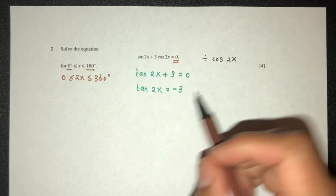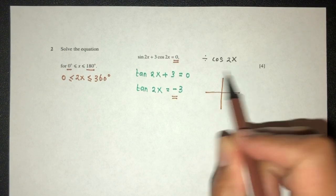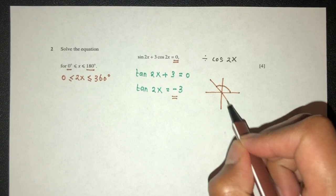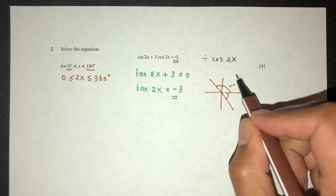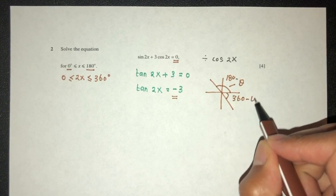So now we realize that tan is negative. It will be in which quadrant? It has to be in the second quadrant and the fourth quadrant. So here it is theta, obviously it is 180 minus theta, and here we have 360 minus theta.